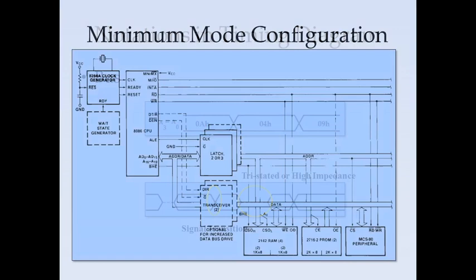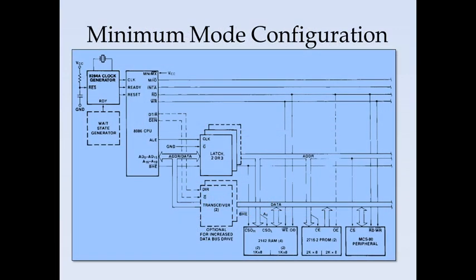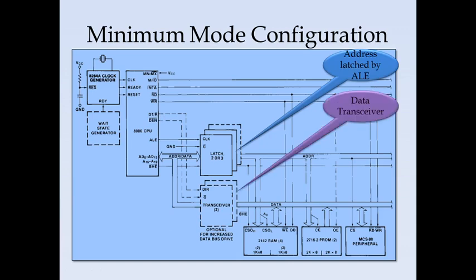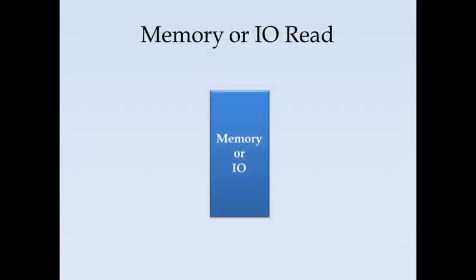Next we will see the bus timings for minimum mode configuration. In minimum mode configuration, the 8086 is the single processor and it is interfaced with memory or a peripheral I/O device. Since the address and data lines are multiplexed, for demultiplexing we use a latch controlled by the ALE signal, and transceivers controlled by DEN and DT/R-bar signals.